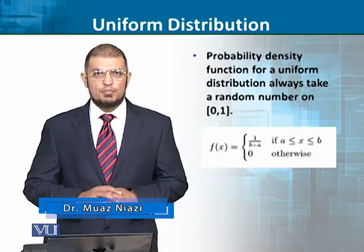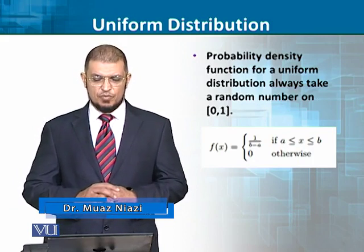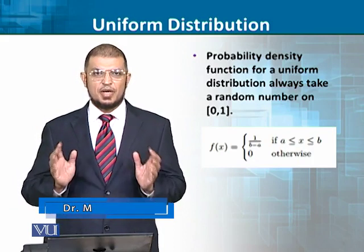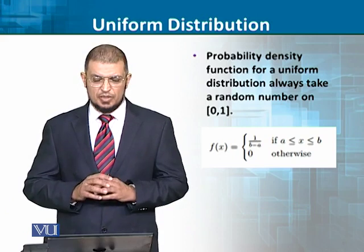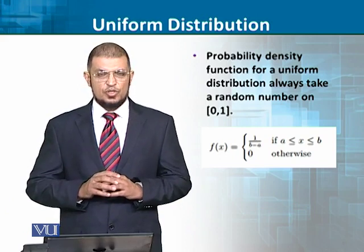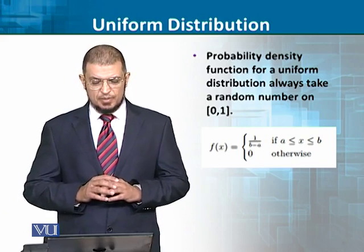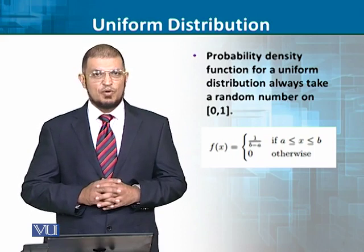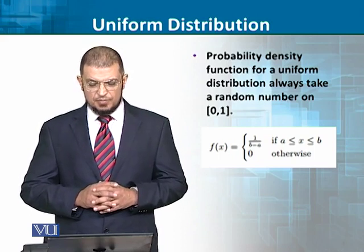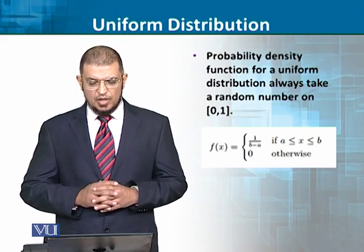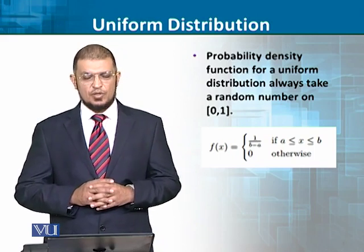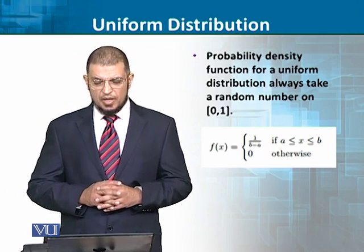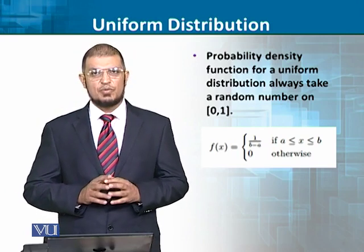This probability density is for a uniform distribution. This is always a random variable which is dependent on the 0 and 1 range. f(x) is equal to 1 over (b minus a), if a is less than or equal to x which is less than or equal to b; otherwise its value is 0.